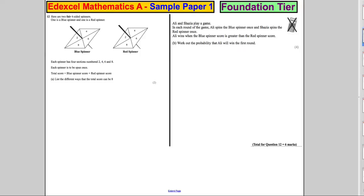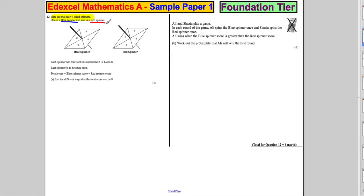Question 12: Here are two fair four-sided spinners. Fair means equal chance of coming up from each of the numbers. One is blue and one is red. Each spinner has four sections: 2, 4, 6, 8. Each spinner is to be spun once. The total score is the sum of the two.